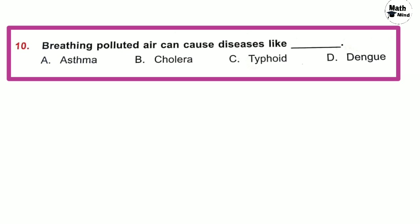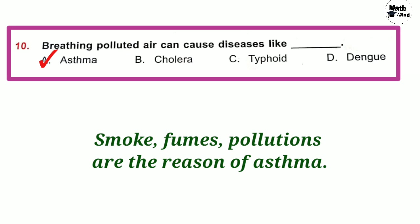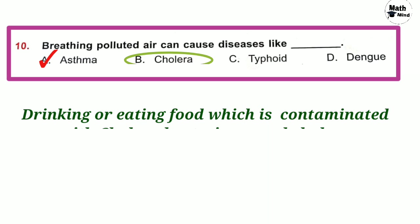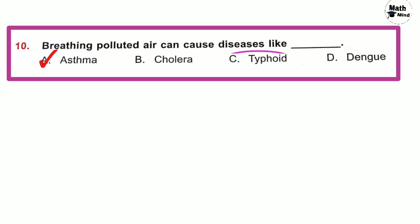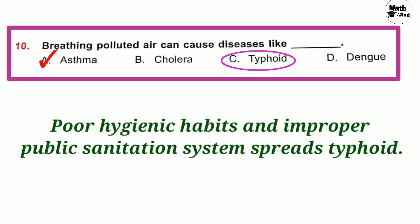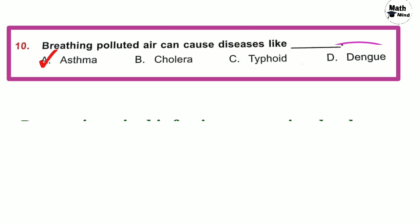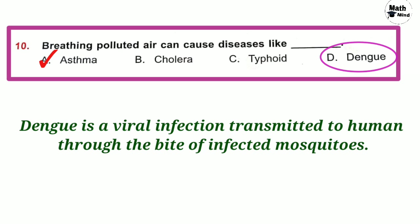Question number 10: Breathing polluted air can cause diseases like — option A is correct — asthma. Smoke, fumes, and pollution are reasons for asthma. Cholera is caused by drinking or eating food contaminated with cholera bacteria. Typhoid spreads through poor hygienic habits and improper public sanitation. Dengue is a viral infection transmitted to humans through the bite of infected mosquitoes.